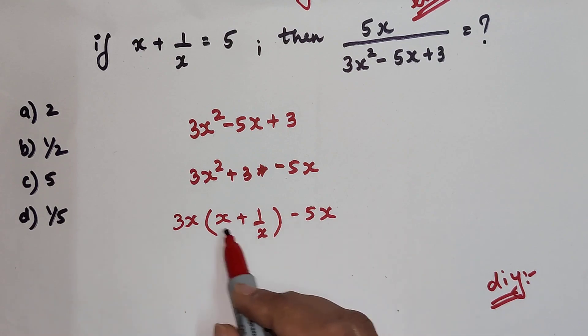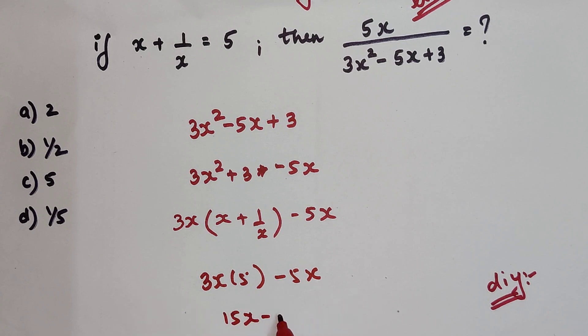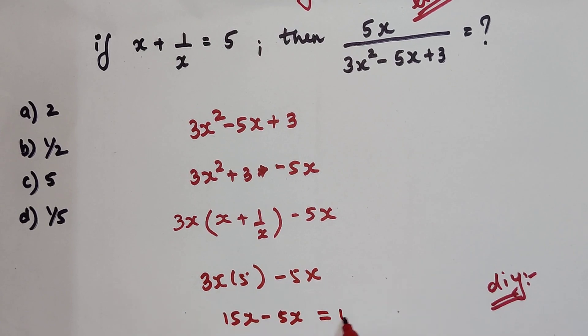So now this 3x into the whole bracket, which is nothing but 5, so 3x into 5 minus 5x. This is now coming out to be 15x minus 5x, which is 10x.